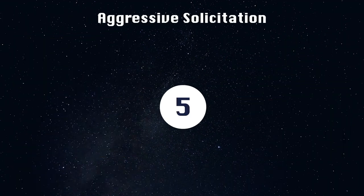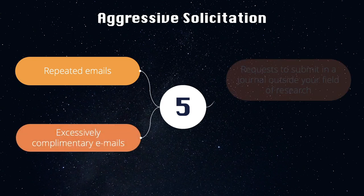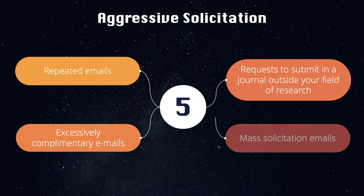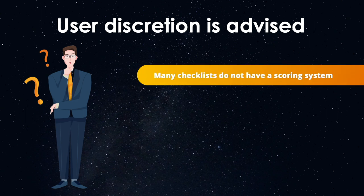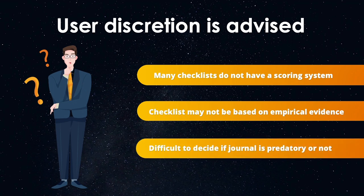The fifth red flag is aggressive solicitation, which includes repeated emails, excessively complimentary emails, requests to submit in a journal outside your field of research, and mass solicitation emails. User discretion is advised. Many of these checklists do not have a scoring system and may not be based on empirical evidence, so it can be difficult to determine whether or not you are dealing with a predatory journal or publisher. Therefore, try to find a checklist which meets these criteria.